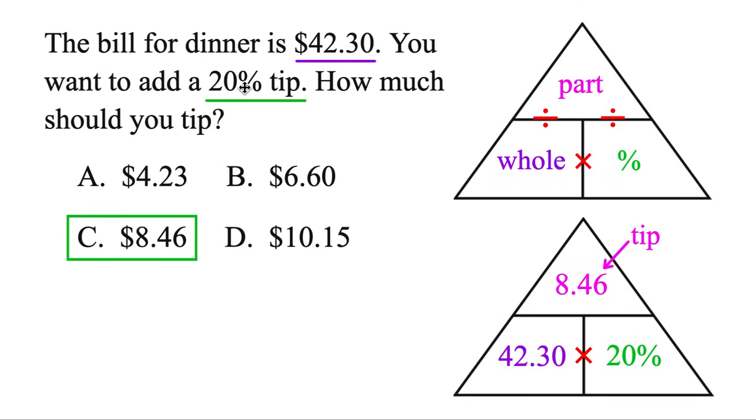But there's many ways to do a 20% tip. So the way that my mom taught me, you can always find 10%. You just take the decimal, move it one place to the left. So $4.23. But then to get 20%, you just want to double that, multiply it by 2. That's another way to get $8.46 there. So let us know in the comments how you do your 20% tip here.